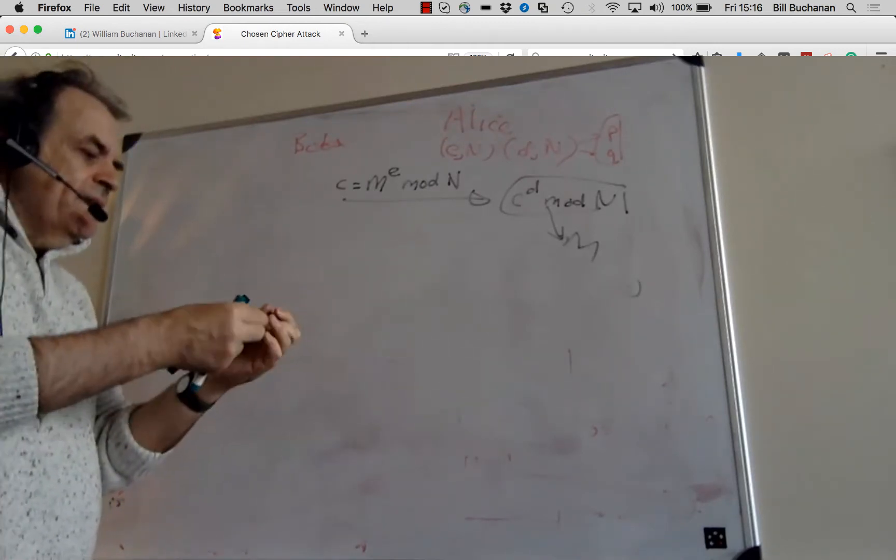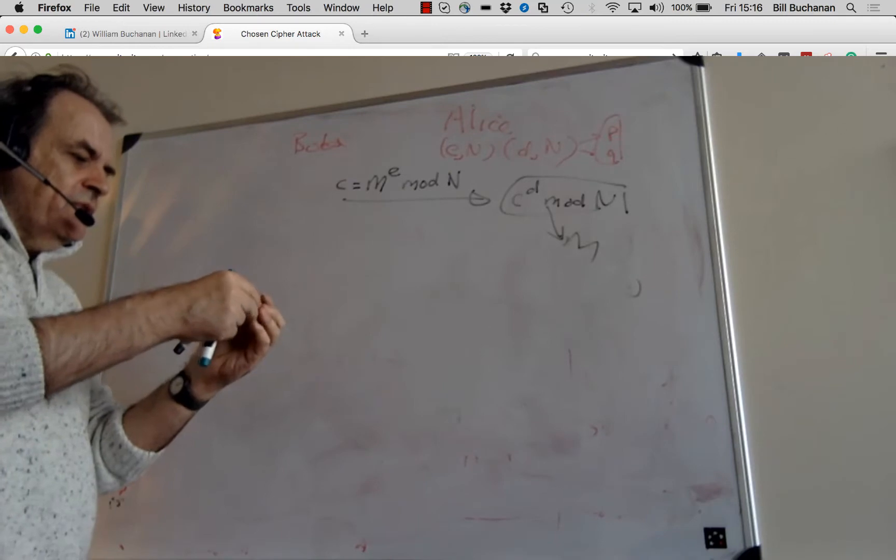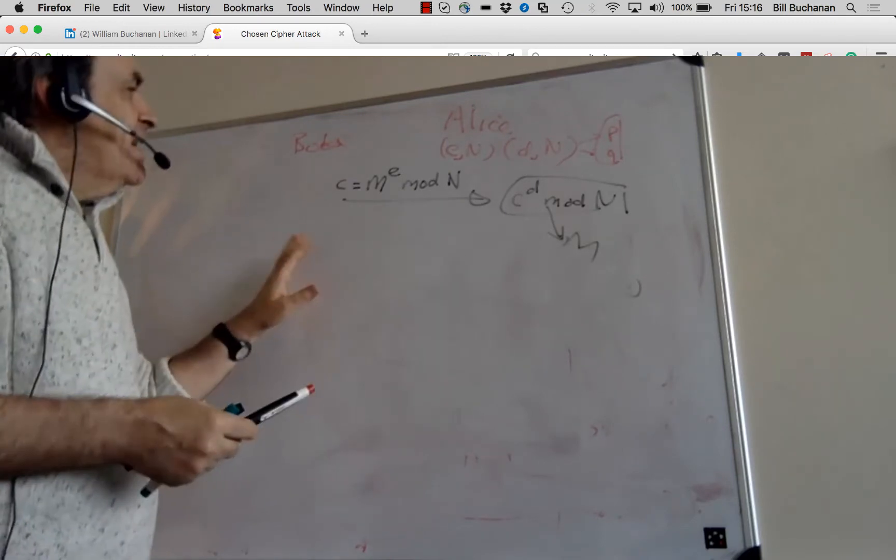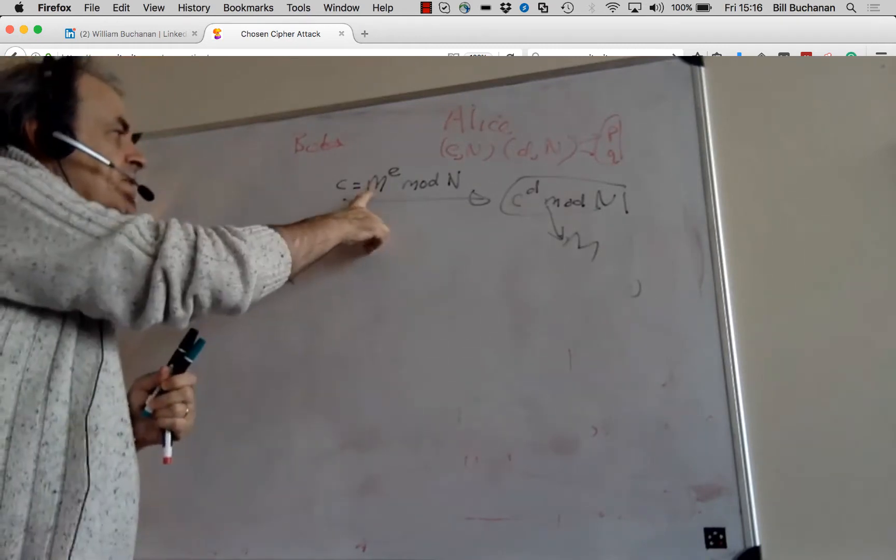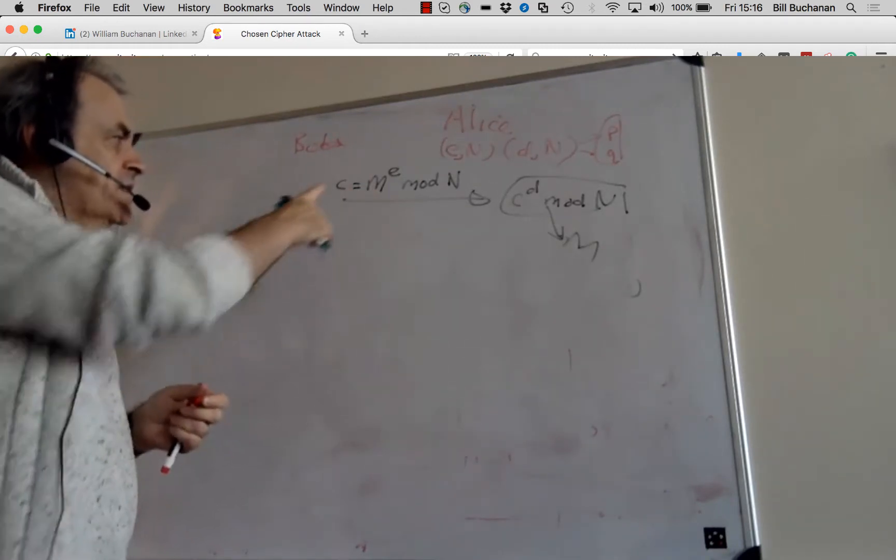So Bob then decides that he wants to hack the message. So he picks a cipher.